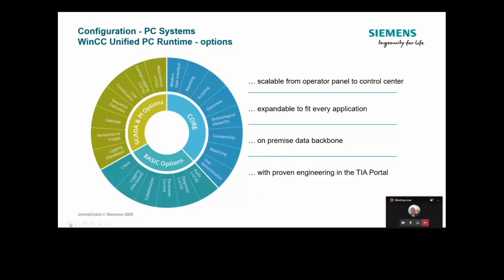Let's look at these in a little bit more detail. We've got it split into three elements: the core, basic options, and the SCADA and plant intelligence options. The core options are all the options that are common to both the Unified Comfort Panels and the PC-based platform. The basic options also work across both platforms but are add-ons that you have to pay for. The core options come with the standard product, irrespective of which platform you go with.